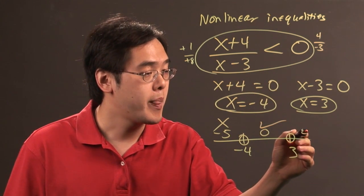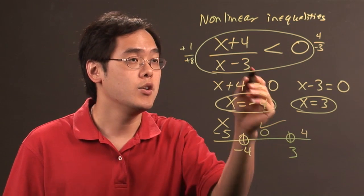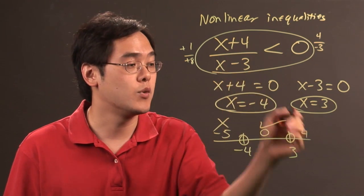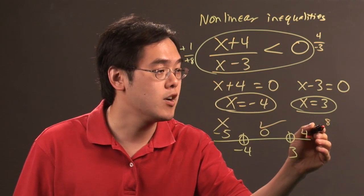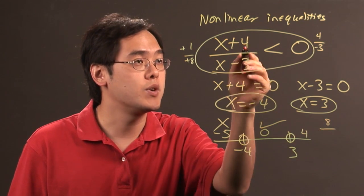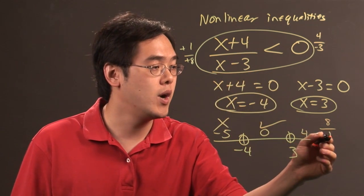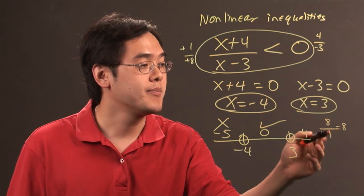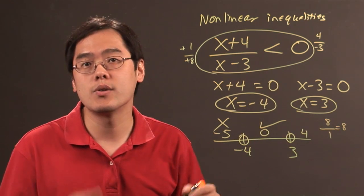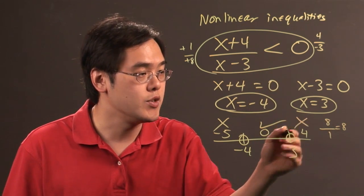When you plug in a number bigger than 3, like 4, do the same thing. 4 + 4 = 8, 4 - 3 = 1, 8 / 1 = 8. 8 is not less than 0, so unfortunately numbers bigger than 3 do not work.